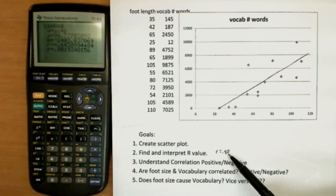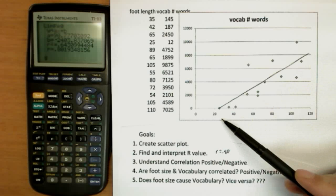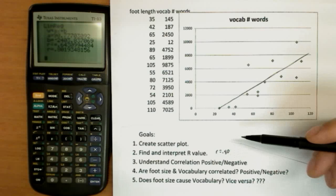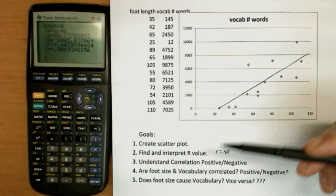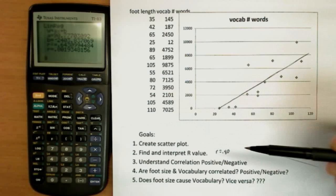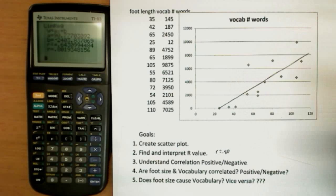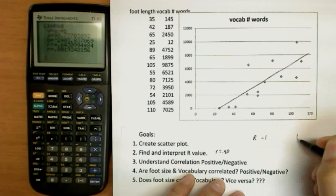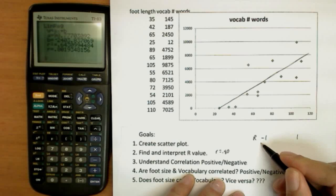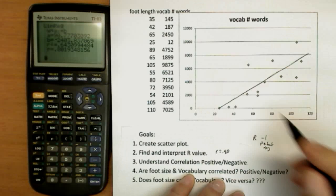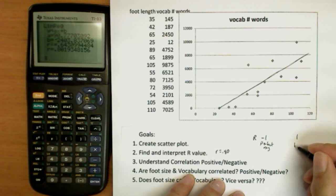Now an R value of 0.80, it's positive. So we have a positive correlation. That means as foot size increases, so does vocabulary. And 0.80 is quite strong. Whether or not how strong is strong in terms of R depends on the number of data points. But for our purposes and the small data sets we're going to use, R values can go from negative 1 to positive 1. Negative 1 is perfect negative. So the data would actually be on a line sloped down. And likewise, positive 1 would be perfect positive.